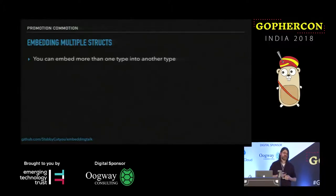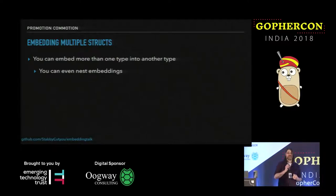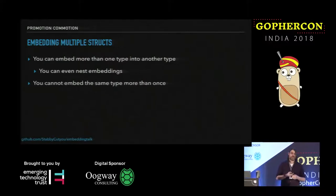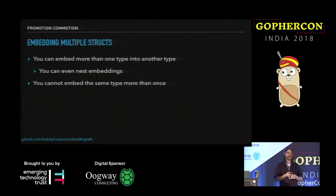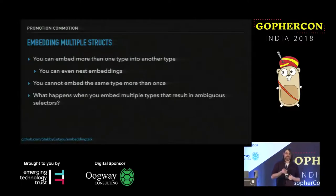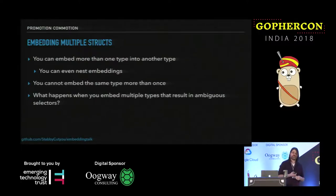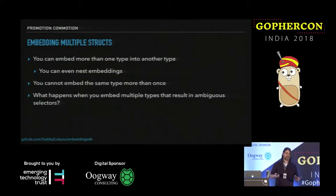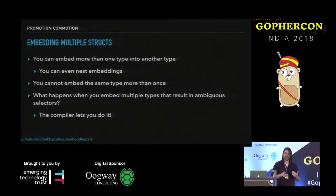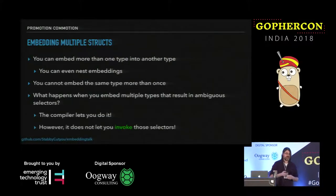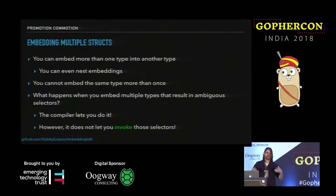You can also embed multiple structs into a single struct, and this is actually really powerful. You can even nest embedding — embeddings that embed, that embed — all the way down, as long as you don't embed the same type more than once or create recursive embeddings. The question is what happens when you embed multiple types that result in ambiguous selectors. Interestingly, the compiler allows you to do this — creating structs with ambiguity baked into their promotion semantics is okay. But if you then go and try to use any of those ambiguous values, that's where things get ugly and the compiler will stop you.